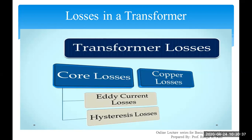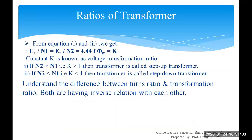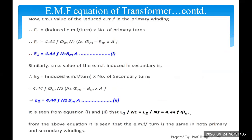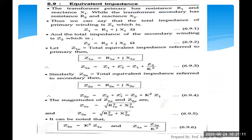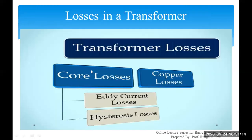There are two types of prominent losses in the transformer: core losses and copper losses. Core losses are losses occurring in the core of the transformer, and copper losses are losses occurring in the winding. Core losses are further divided into two types: eddy current loss and hysteresis loss.